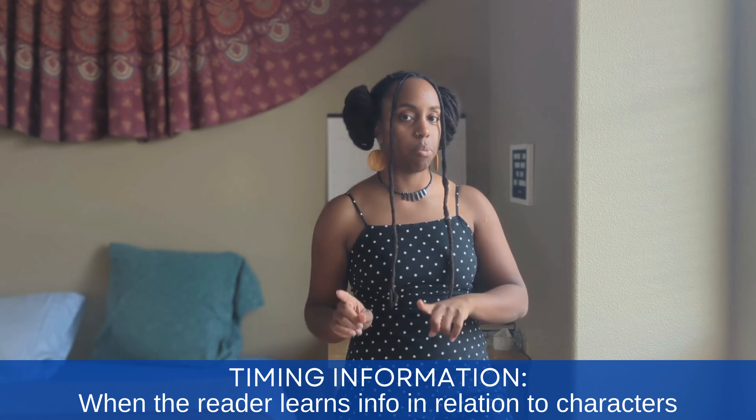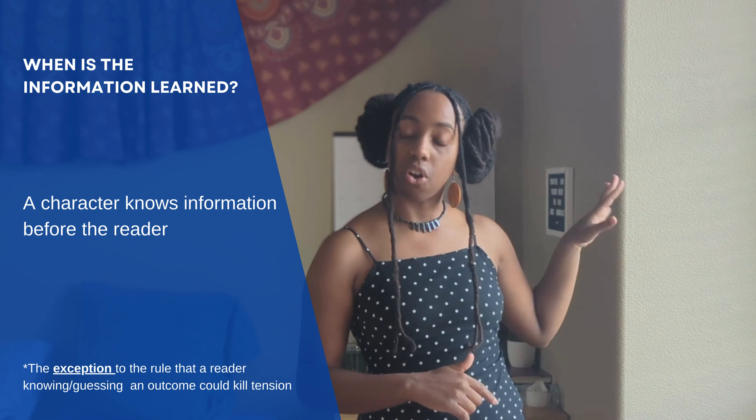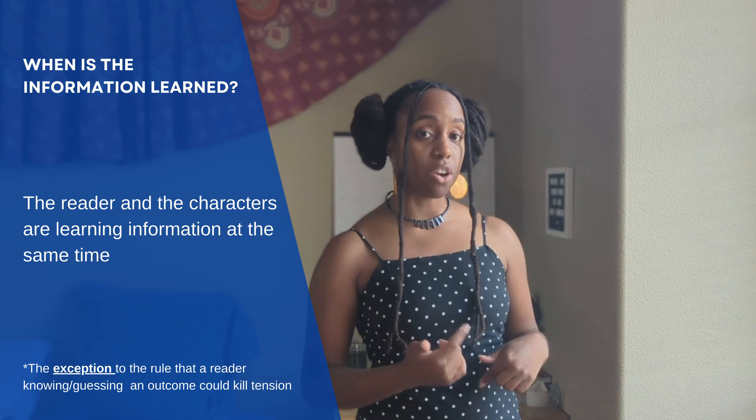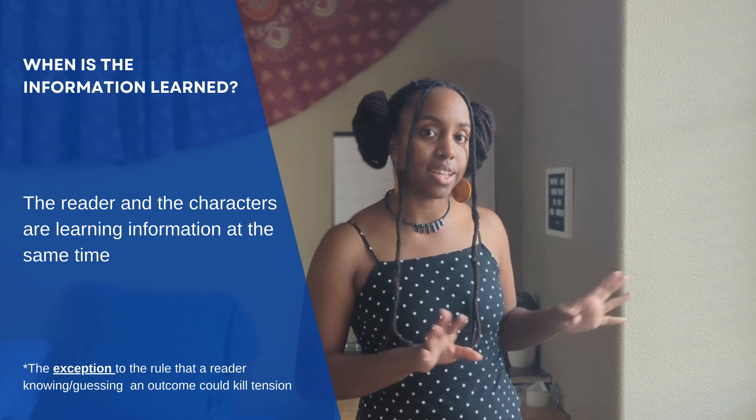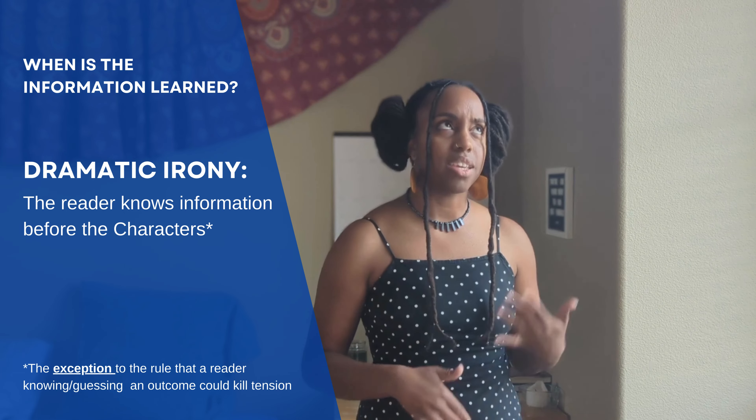If you want to take tension to the next level, consider when your reader learns information in relation to your characters. The reader is often riding along with the perspective of the protagonist, so you can substitute protagonist for reader here. If the reader is discovering new information that another character already knows, that's a mystery. If the reader discovers information at the same time as the characters, that's suspense. If the reader discovers information before the character, that's dramatic irony — think of the end of Romeo and Juliet or Oedipus. But in all of these, there's still a question, some uncertainty, whether about what the information actually is or how it will affect the characters in pursuit of their goal.